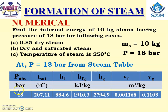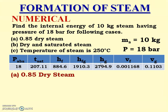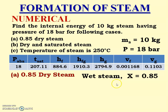From the steam table at 18 bar: T_sat = 207.11°C, and we obtain hf, hfg, hg, vf, and vg. For Case A, dryness fraction x = 0.85 is given, confirming it is wet steam.